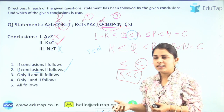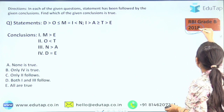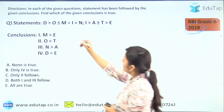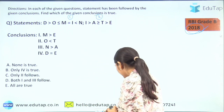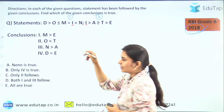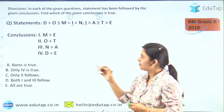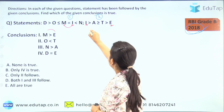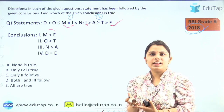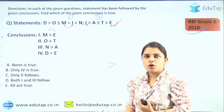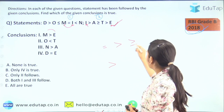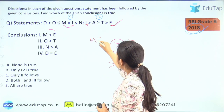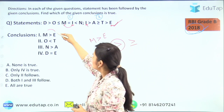कितना simple था! Next आपका 2018 का previous year question है — बिल्कुल basic पे base था। First statement और second statement किसके through connect होगी? कौन सा common element है? That is I। दोनों में I common है, तो M से E पे चलो। M से I पे, I से E पे — way बिल्कुल clear दिख रहा है, सारे open signs हैं। Sign select करो — तीन signs में से यह वाला। So: M is greater than E। So first conclusion is correct।